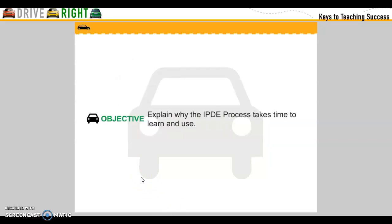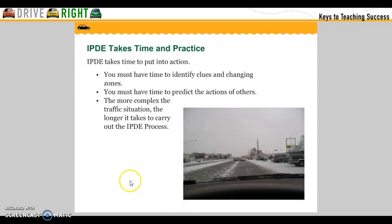Explain why the IPTID process takes time to learn and use. IPTID takes time and practice — time to put into action, time to identify clues and change zones, and time to predict the actions of others. The more complex the traffic situation, the longer it takes to carry out the IPTID process.